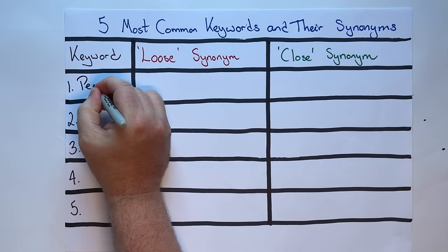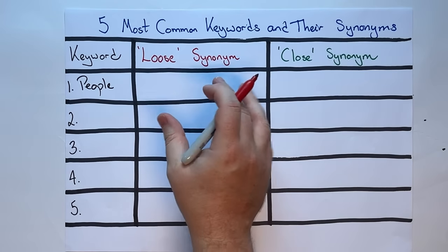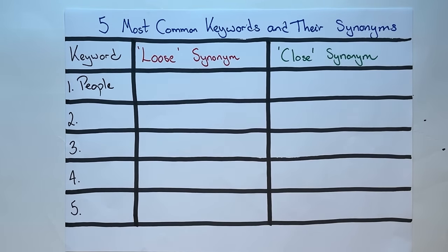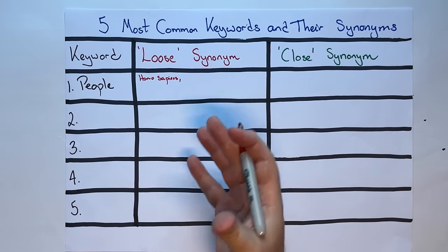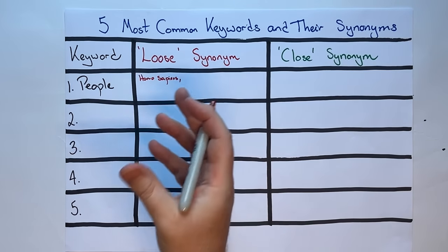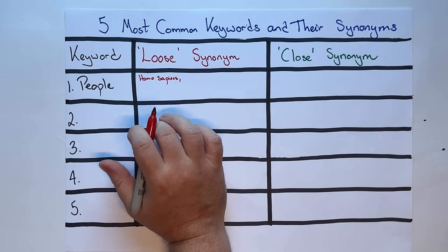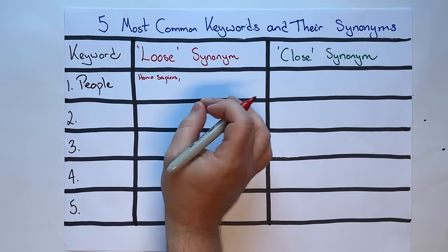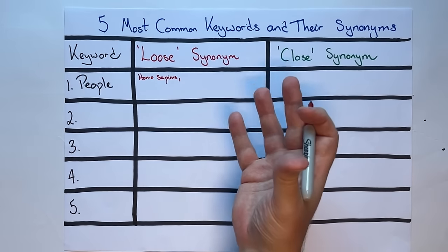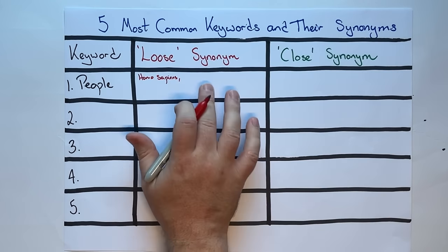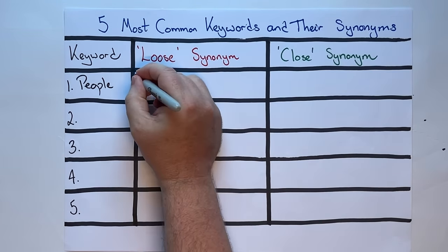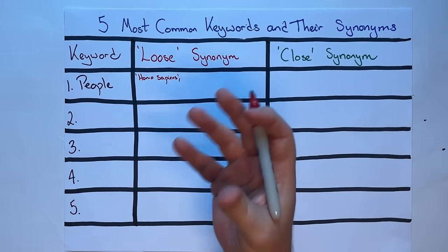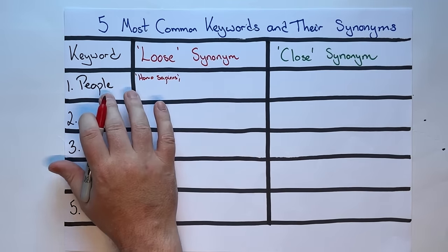Number one is 'people.' What are some synonyms you should not use? The first is 'homo sapiens.' This is an overly academic, overly scientific way to describe people. The only context in which you'd use 'homo sapiens' is when differentiating people from other species — and we're not doing that. Anything overly scientific, overly academic, or very specific is not appropriate for such a general term as 'people.'